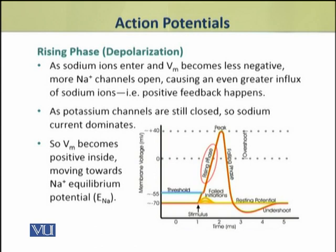After a threshold stimulus acts on the axon hillock, sodium ions start to enter and the membrane potential becomes less negative. This causes more sodium channels to open, causing an even greater influx of sodium ions — a positive feedback loop. The sodium current is dominated because potassium channels remain closed, so the membrane potential becomes increasingly positive.